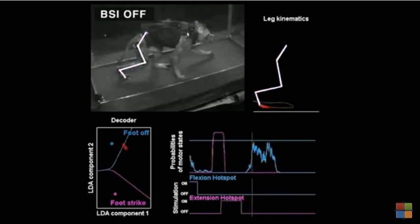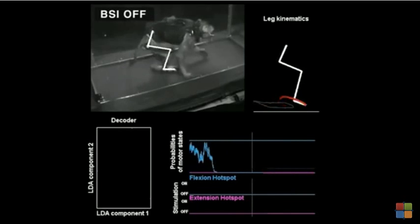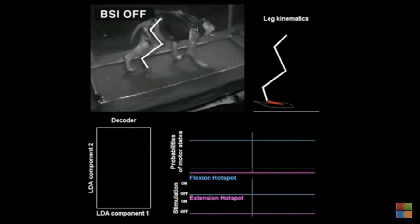Turning off the brain-spinal interface instantly abolished locomotor movements of the injured leg.